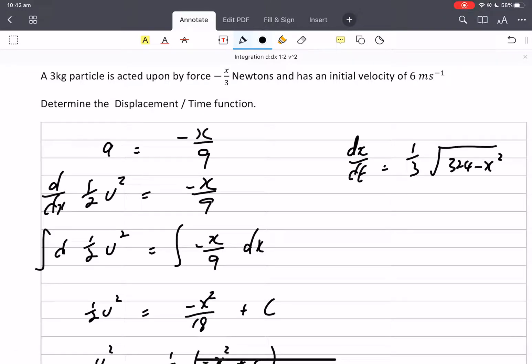We've got dx dt equals one third square root 324 minus x squared. So let's get the square root to the other side. Get the x and the dx together, and we've got one third dt together. Integrate both sides.